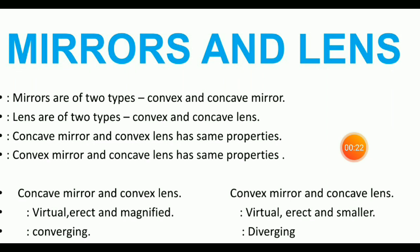Convex mirror and concave lens have the same properties. Concave mirror and convex lens form images that are virtual, erect, and magnified. These are also known as converging mirrors and lenses. Convex mirror and concave lens form images that are virtual, erect, and smaller in size.